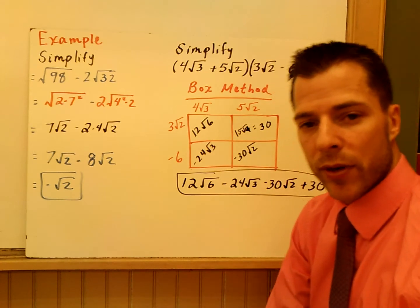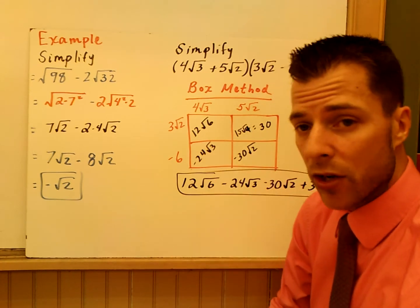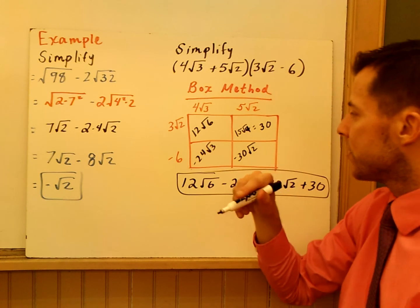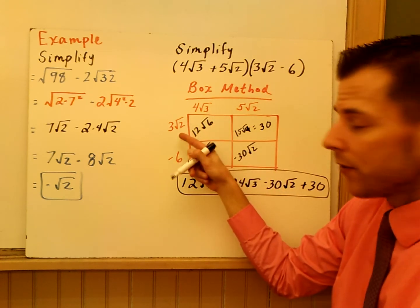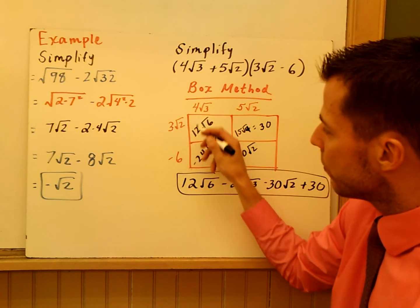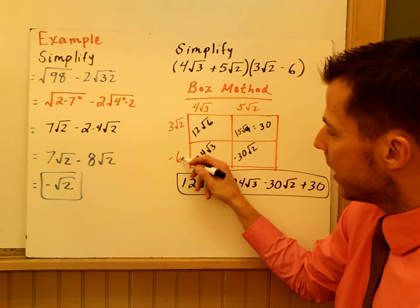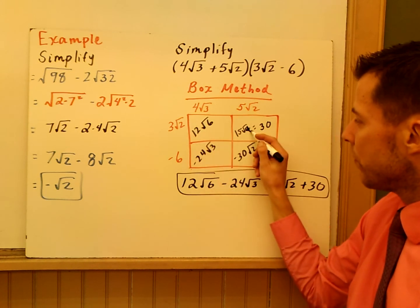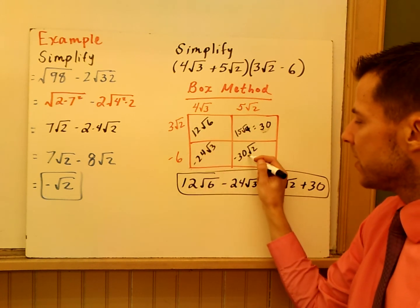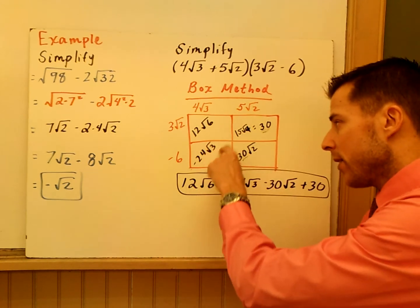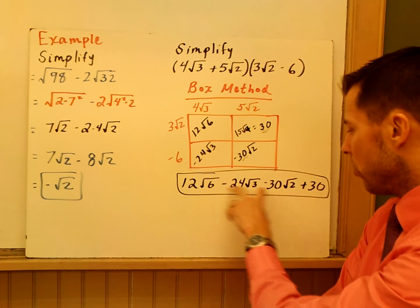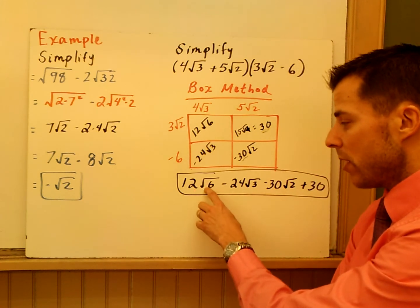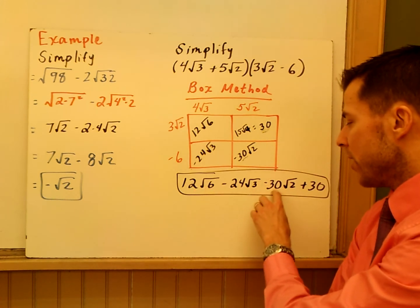Lastly, we're going to multiply this binomial: 4 root 3 plus 5 root 2, times the quantity 3 root 2 minus 6. Using the box method and combining the areas: 3 times 4 is 12, and root 2 times root 3 is root 6, so 12 root 6. Negative 6 times 4 is negative 24 root 3. 5 times 3 is 15, and root 2 times root 2 is root 4, which equals 2, so that's 30. 5 times negative 6 is negative 30 root 2. Writing all areas down — there are no like terms, no numbers with the same index or radicand. The answer is 12 root 6 minus 24 root 3 minus 30 root 2 plus 30.